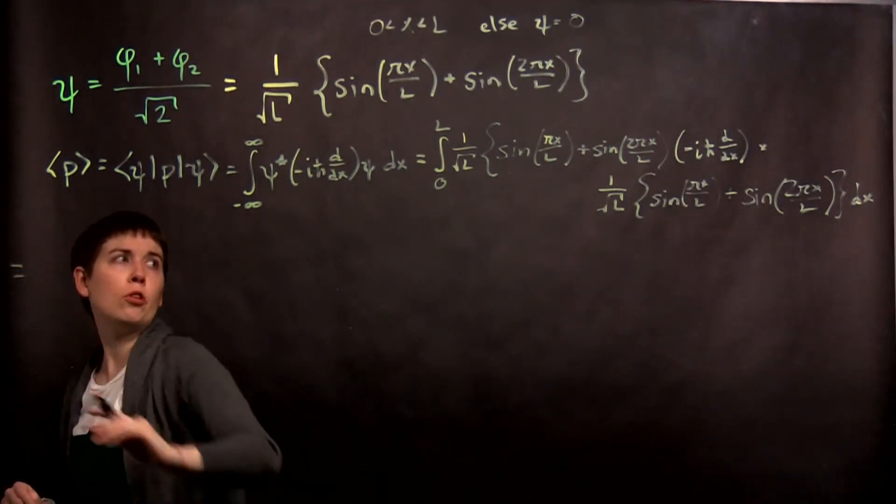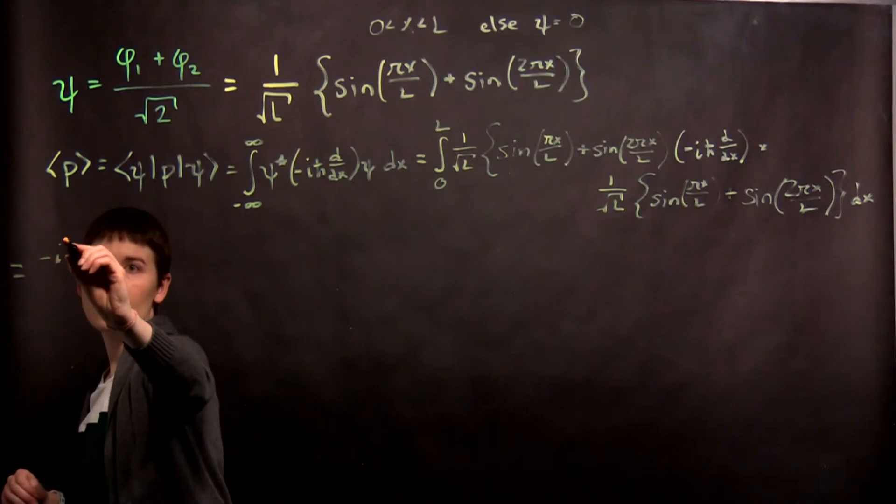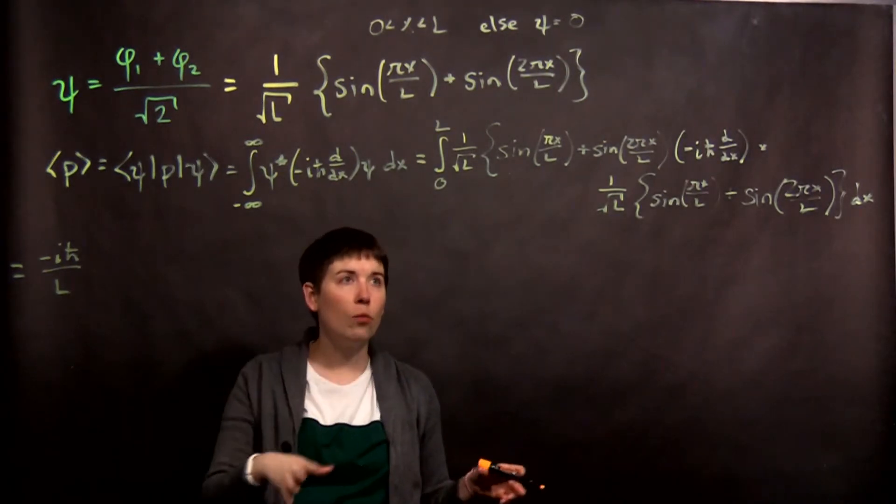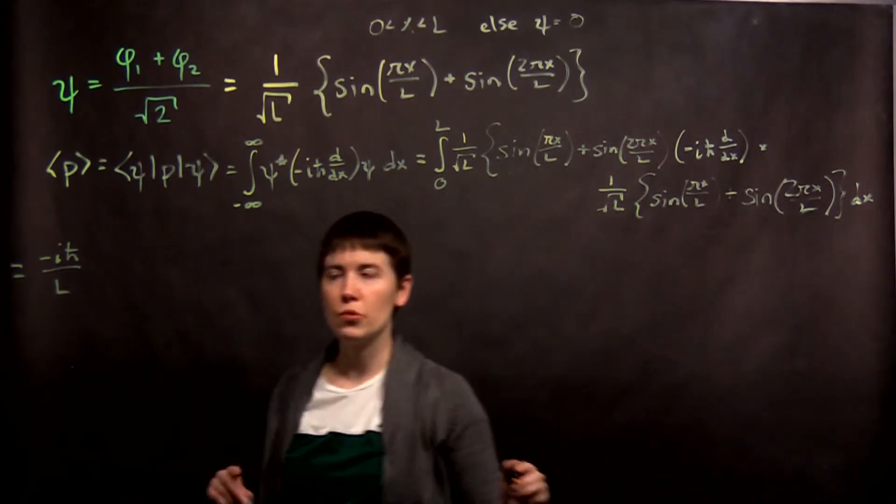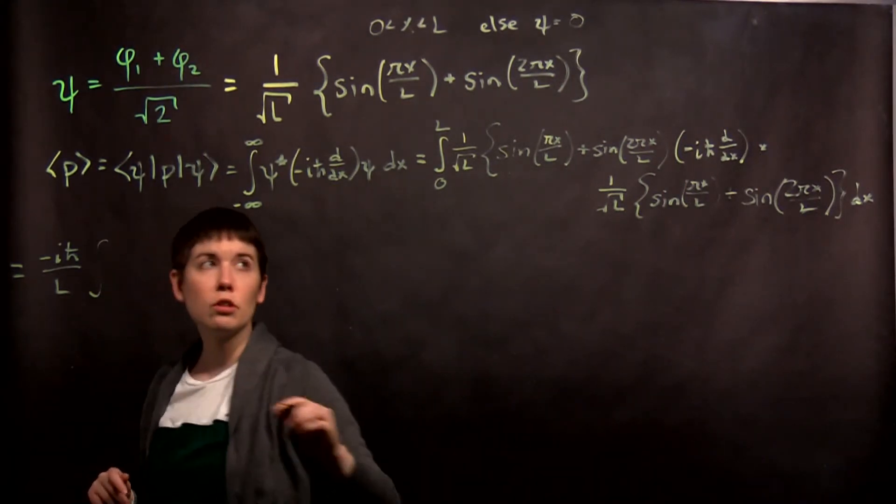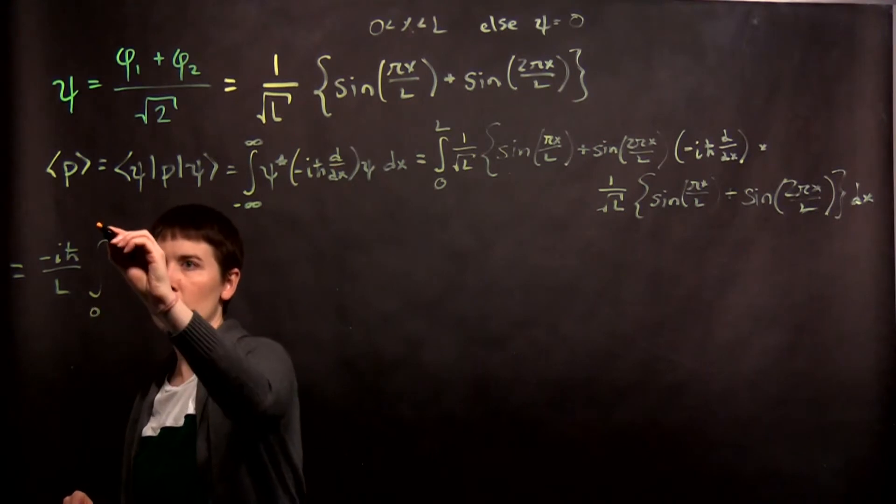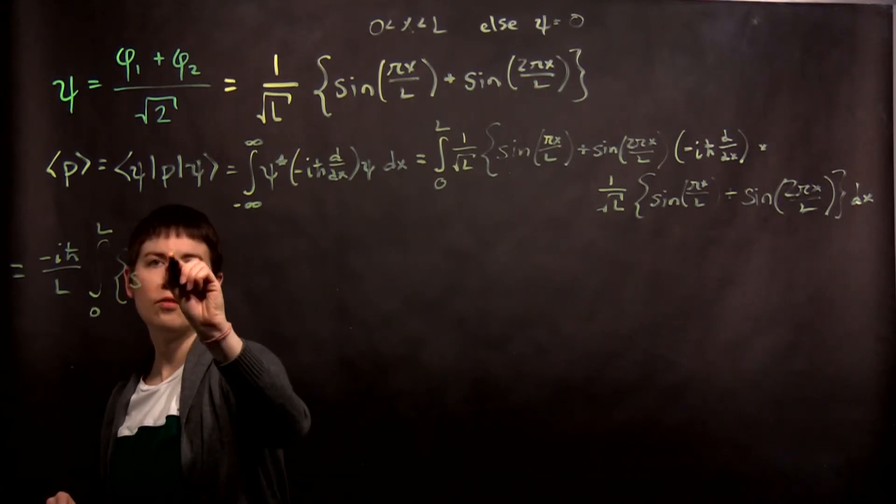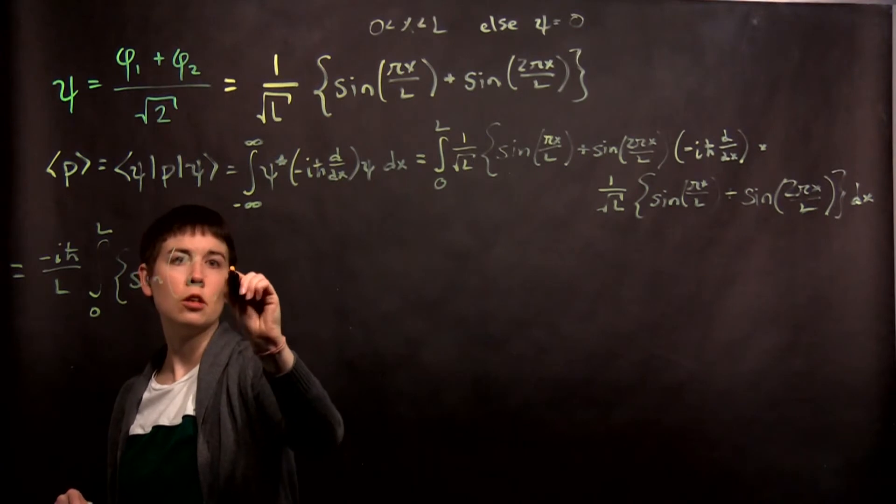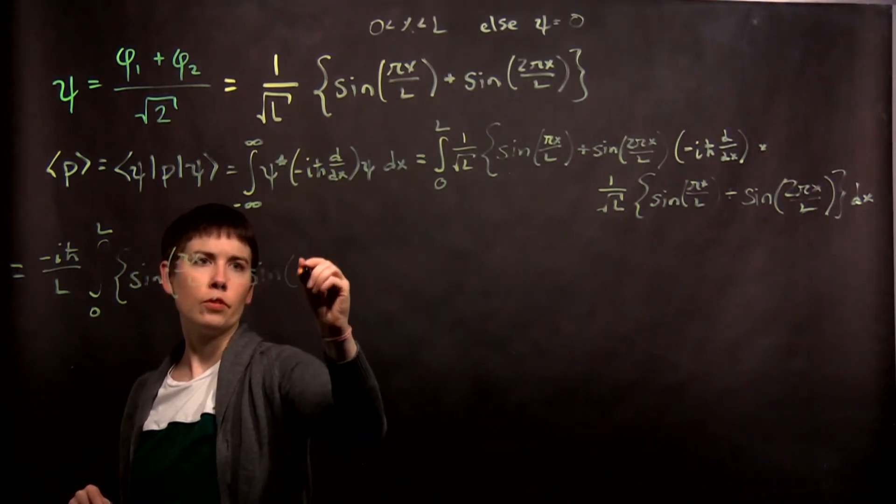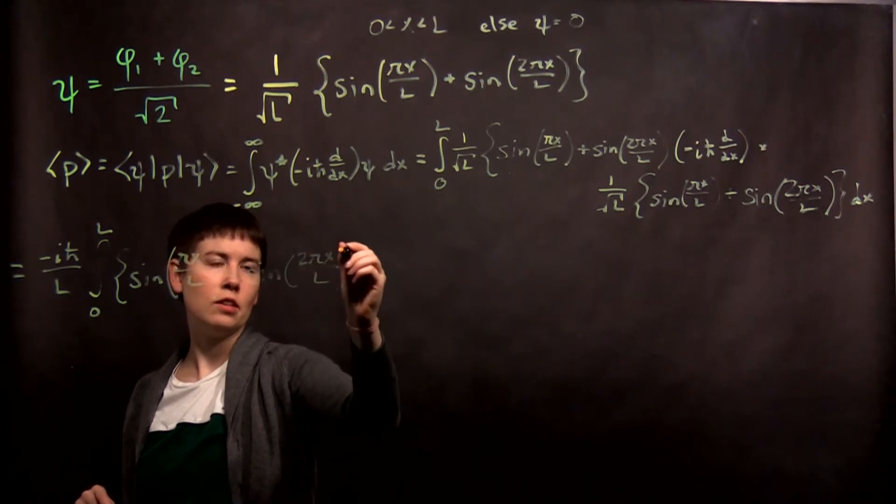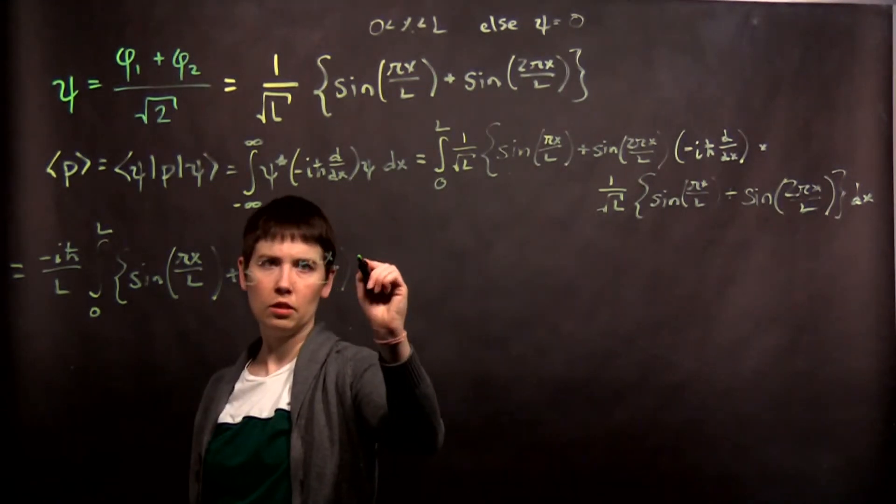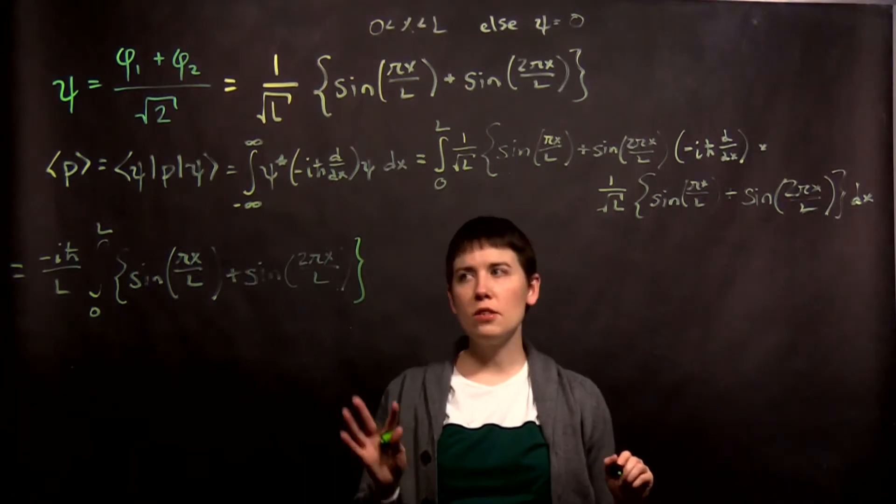So now we can pull out in front a negative i h bar over L, because I have a square root of L, 1 over square root of L, and another 1 over square root of L. And then we have to actually apply this d dx to these terms. So my integral has become 0 to L, and I still have my original term on the left. So sine of pi x over L, plus sine of 2 pi x over L. I am going to have to switch colors so you have a chance of seeing this.